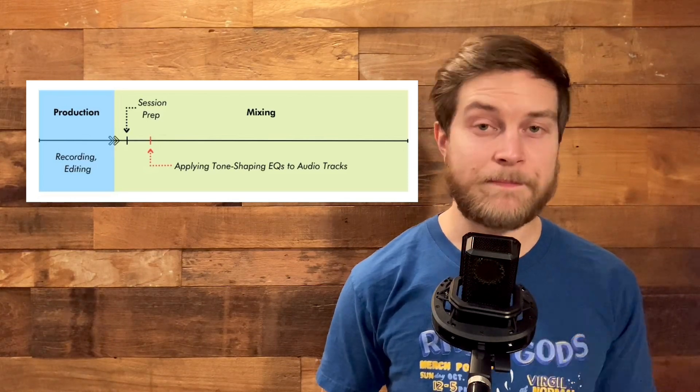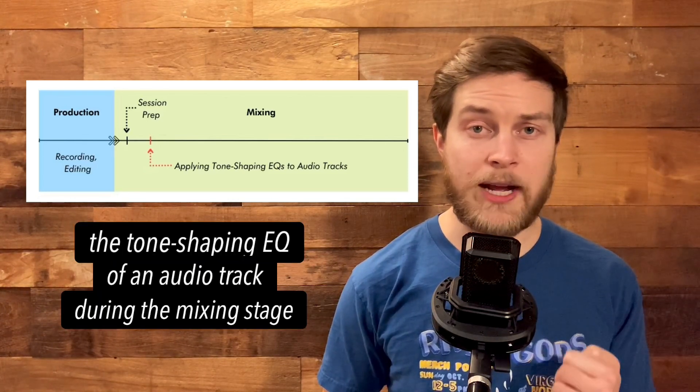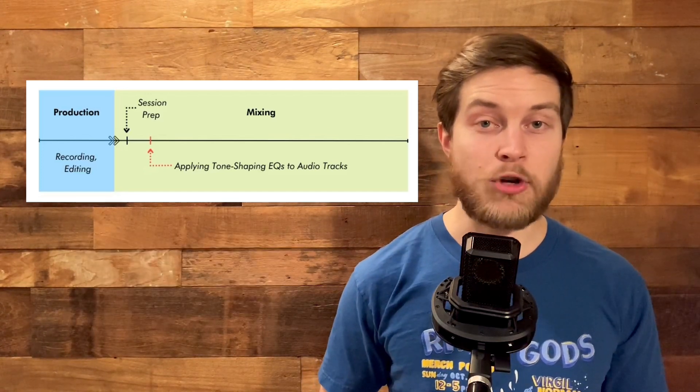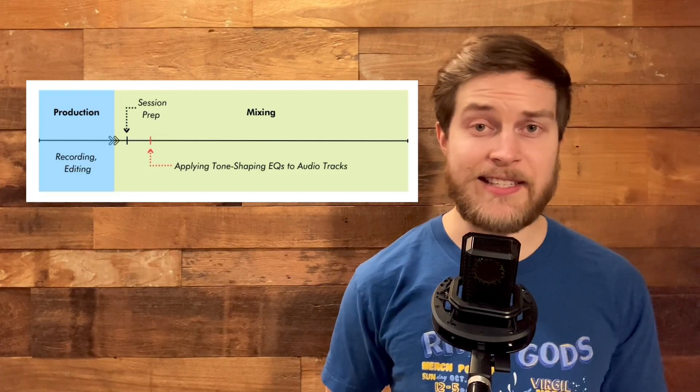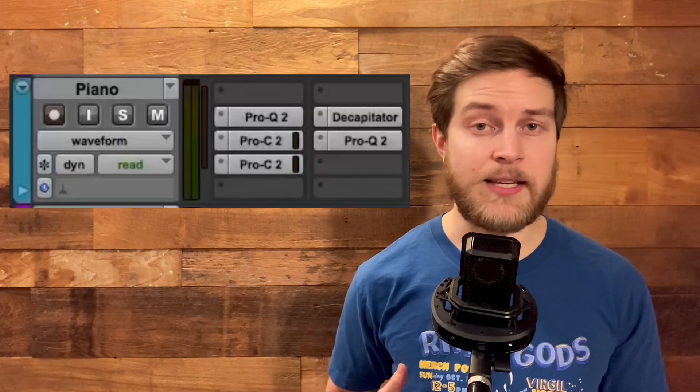We're going to be focusing in on one specific application: the tone-shaping EQ of an audio track during the mixing stage. When mixing any given audio track, whether it's a vocal, a bass guitar, a snare drum, you might run that signal through a series of plugins, creating what's called a processing chain.